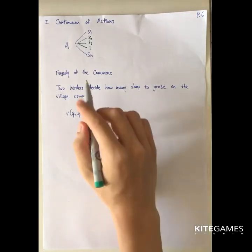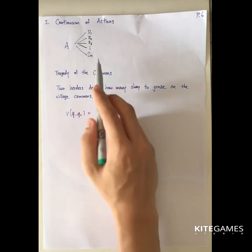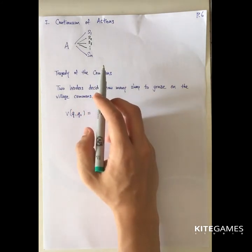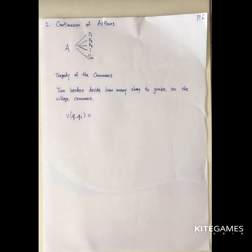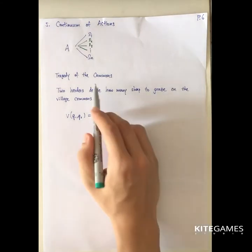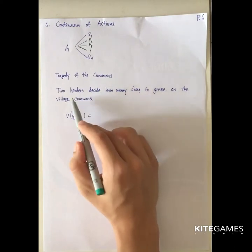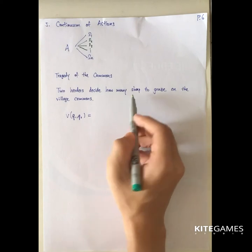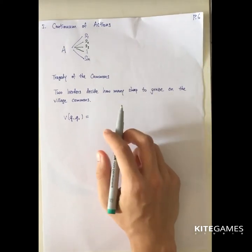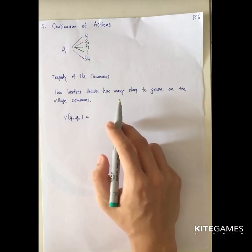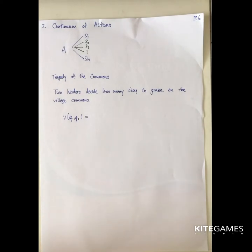One very famous application is the tragedy of the commons. In most continuum-of-actions models, we use production functions. Firms can produce one to infinity units of output, and they should choose the optimal output based on the other competitor's actions. One very famous example is the tragedy of the commons: two herders decide how many sheep to graze on the village commons.